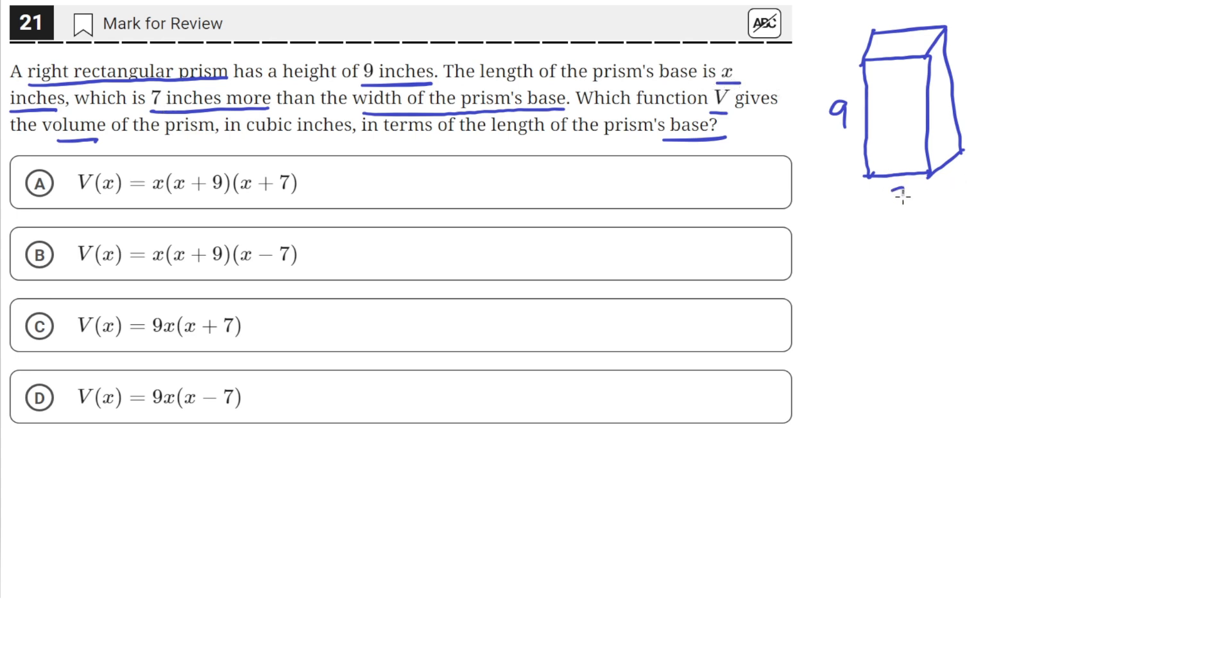So we'll say this side here is x inches. And then the width is 7 inches less than the length. Here it says that the length is 7 inches more than the width, which is the same as saying that this length here, the width, is 7 inches less than the length. Which means that this width is equal to x minus 7 inches.